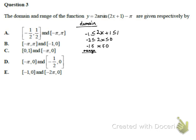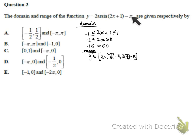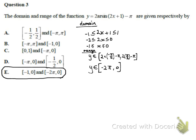Now let's consider the range. The range of normal arcsin goes from −π/2 to +π/2. So we operate on the minimum to maximum y-value by multiplying by 2 and then subtracting π. When we simplify, there we have it. So the correct answer must be E.